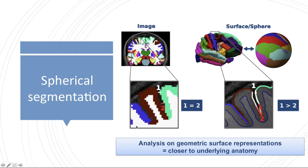A neural network trained in the image space will however treat a missegmentation of pixel pair 1 and 2 equally, meaning the error will be the same. Using the new field of geometric deep learning promises to overcome these restrictions, as convolutions are applied directly on the surface where the distance information is accurately represented.